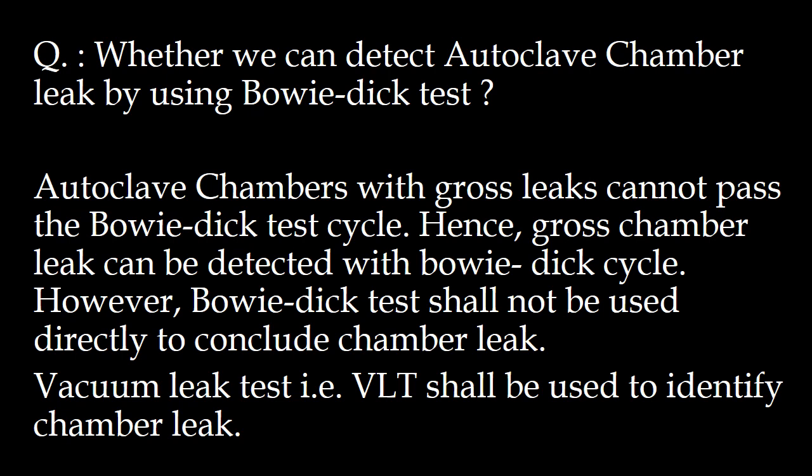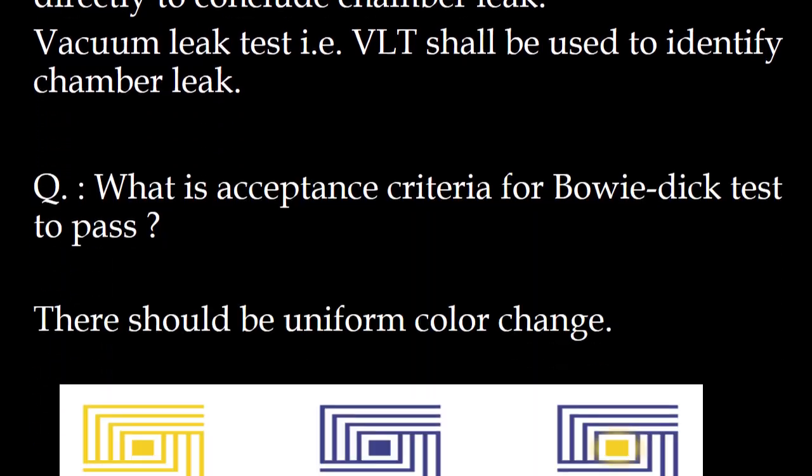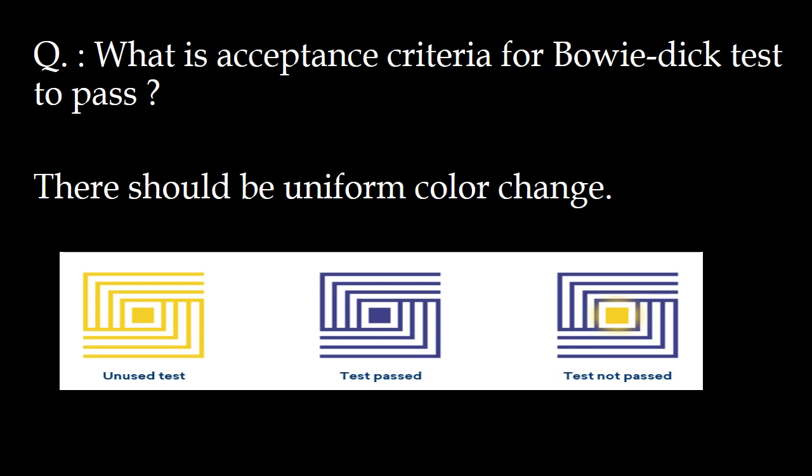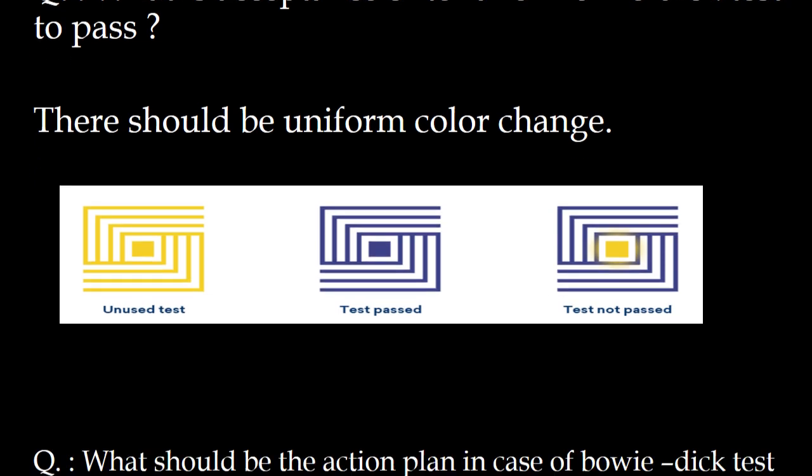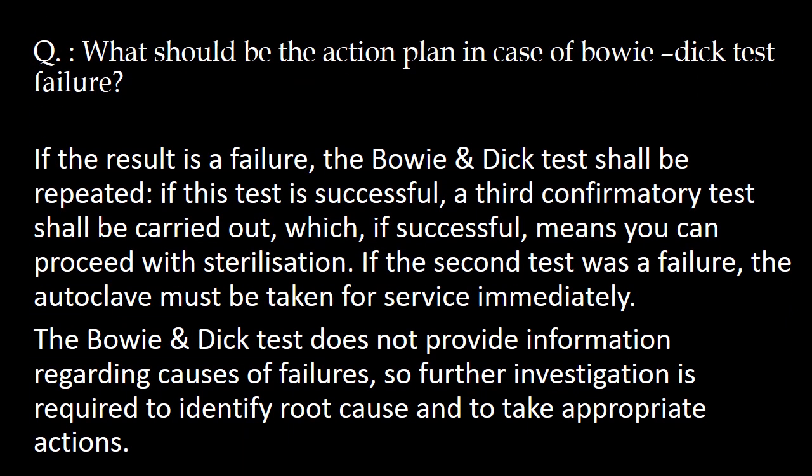What is the acceptance criteria for the Bowie Dick test to pass? There should be a uniform color change across the indicator sheet. The schematic illustrates three conditions: an unused test pack color, a test-passed pack color, and a test-not-passed pack color.